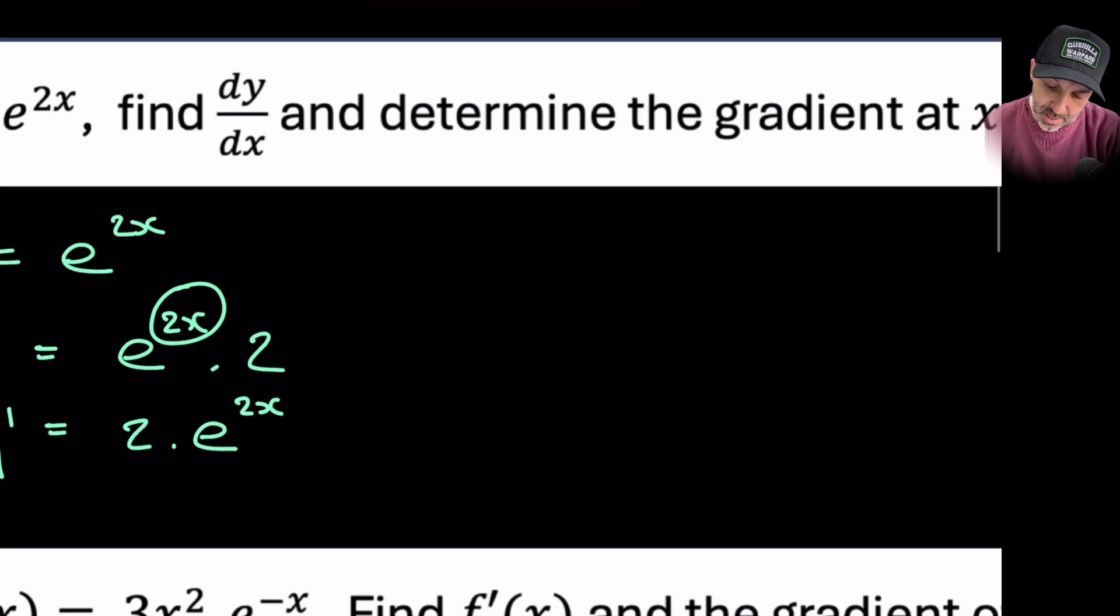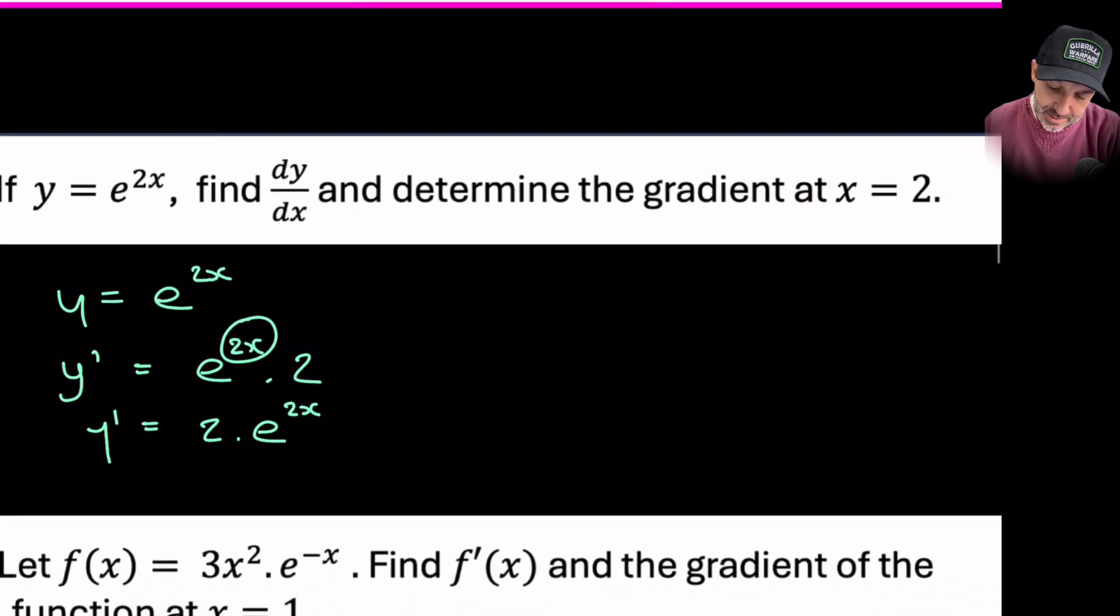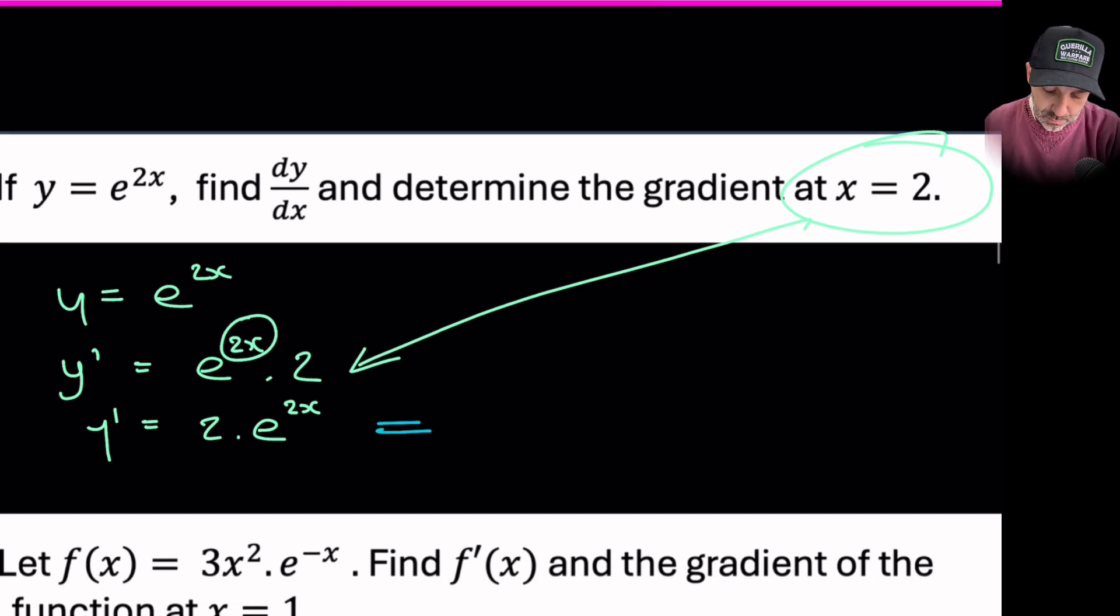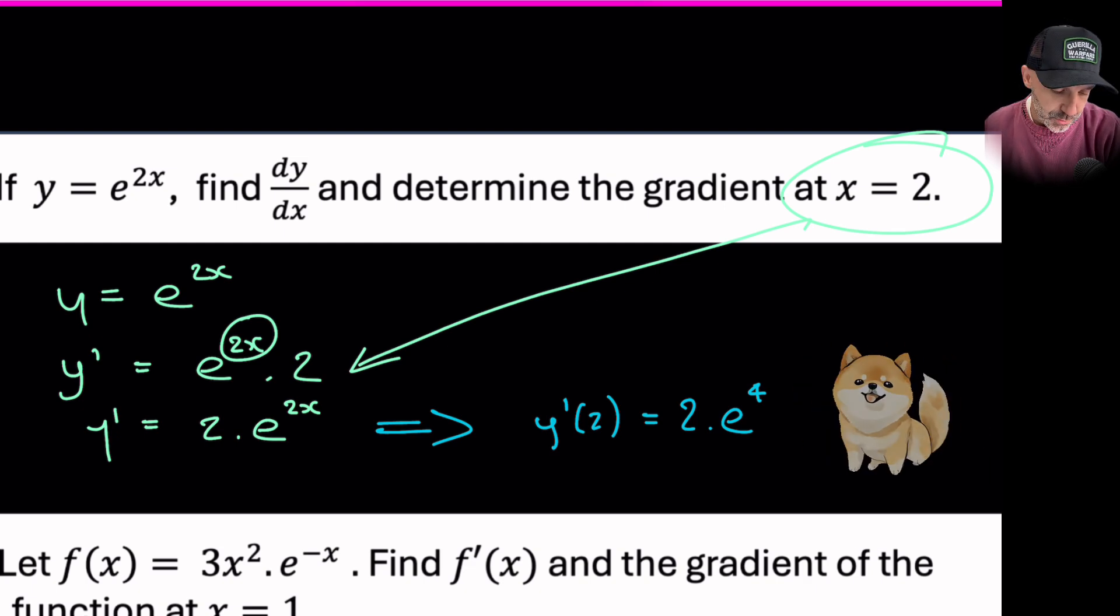Now the question states find the gradient at x = 2. So now I just need to go ahead and substitute 2 into this. I'm going to say what is the derivative when I substitute 2 into it. Therefore it would be 2e^(2×2) which is 4, and without a calculator I'll just leave that as 2 times e^4. And that's it. That's question 1.